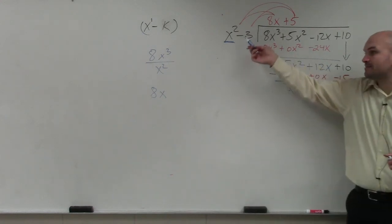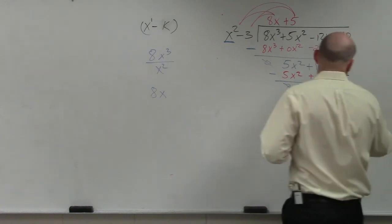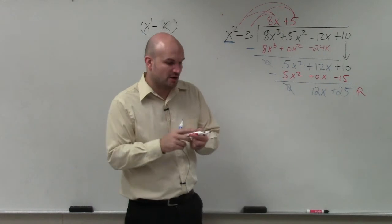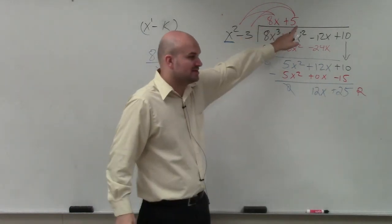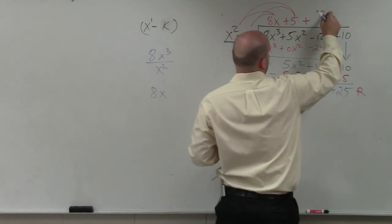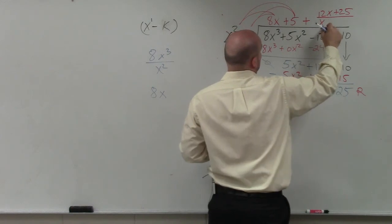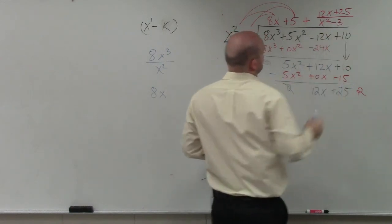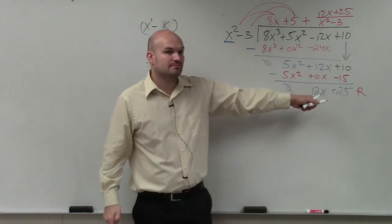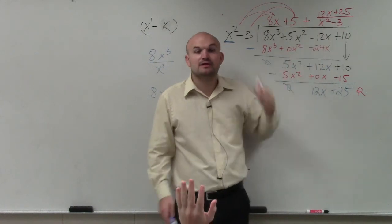Now, does x² minus 3 divide into this? No. So this is our remainder. Your quotient, the way that we write our quotient, is 8x plus 5 plus your remainder divided by your divisor, which is 12x plus 25 over x² minus 3. When you have a remainder, make sure you write it as quotient plus remainder over divisor.